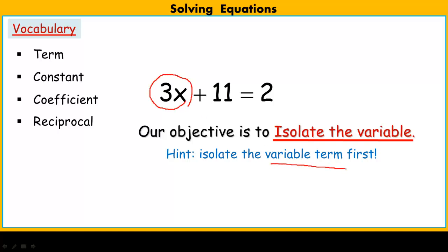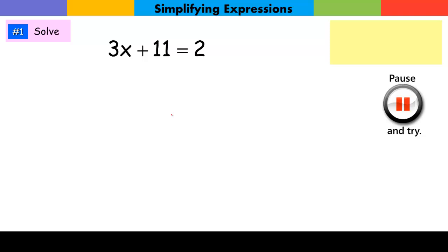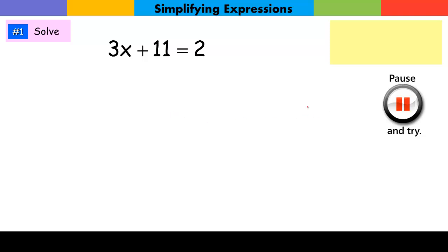In this particular equation, we would have to get rid of the constant. How we get rid of the constant is we add or subtract — in this case, subtract 11 from both sides. Our second step would be to either multiply or divide to get rid of the coefficient, the 3. Let's see that in action. You can pause and try it yourself, or wait until I do it.